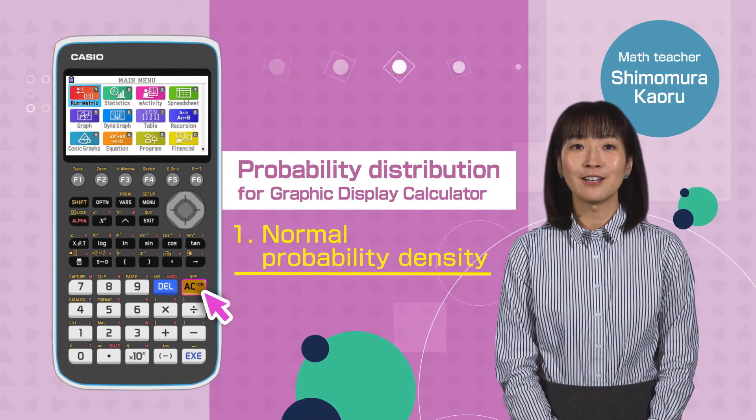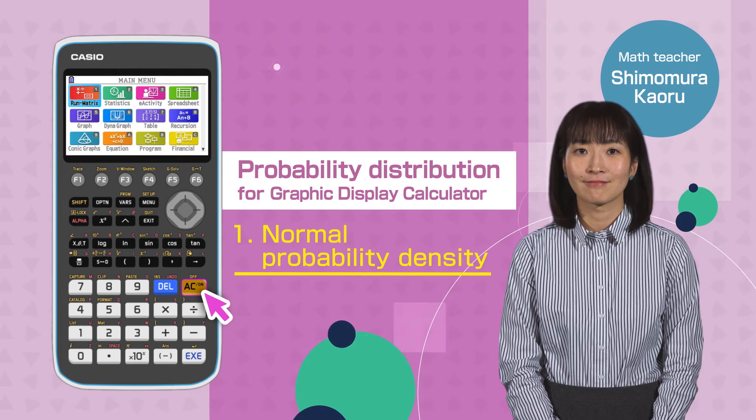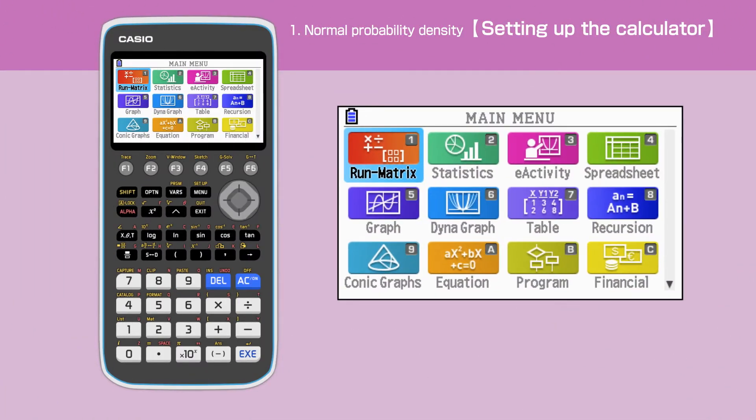Switch on your calculator, pressing AC button. Press the menu key to open the main menu, then move the cursor or press 2 to select the statistics function.